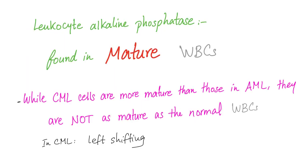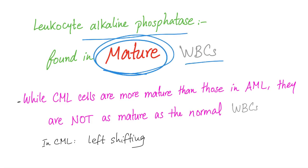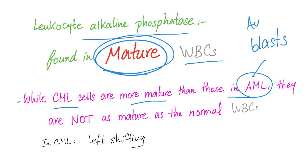Don't forget, leukocyte alkaline phosphatase is found in mature white blood cells. CML cells are more mature than those in AML. AML is very immature — those cells have blasts with the famous Auer rods. But CML cells are more mature, though they are not as mature as normal white blood cells. Of course, they are still cancer.